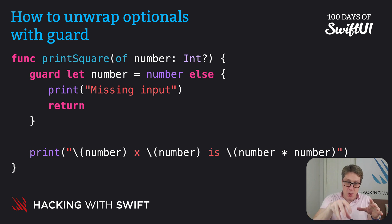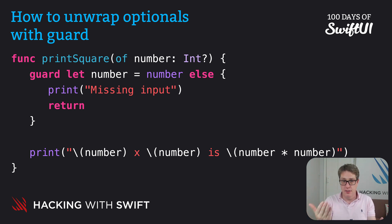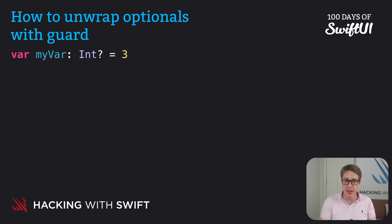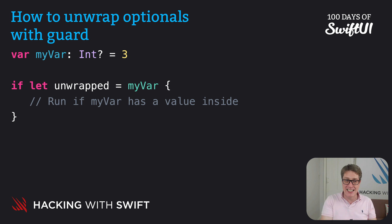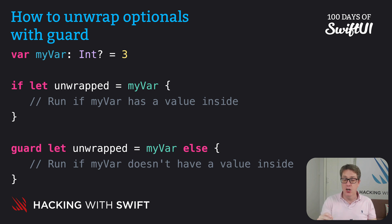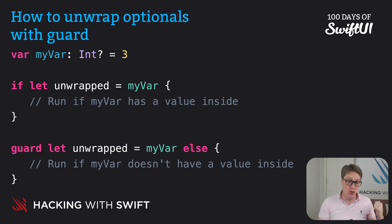Like if let, guard let checks whether an optional has a value inside, and if it does, it retrieves the value and places it into a constant of our choosing — a shadowed number constant in this case. However, the way it does so flips things around from if let. If we had an optional integer equal to three called myVar and we unwrap that using if let, the code between the braces would run only if myVar had a value inside. With guard let, the code between the braces runs only if it does not have a value inside.